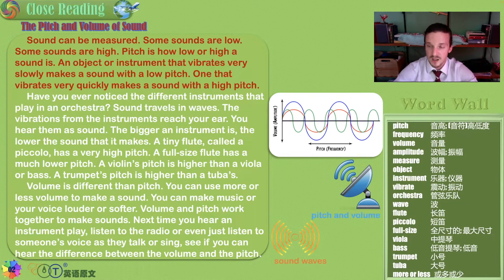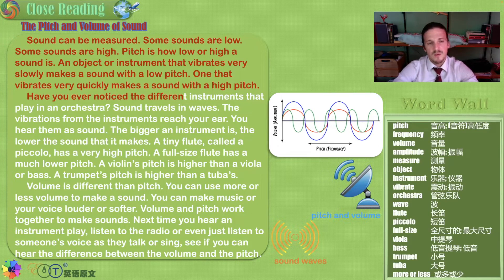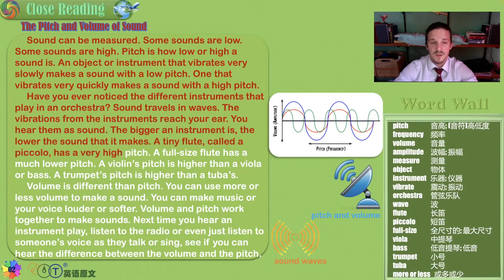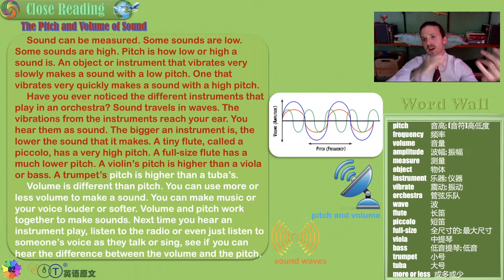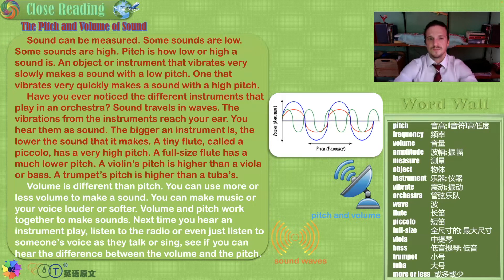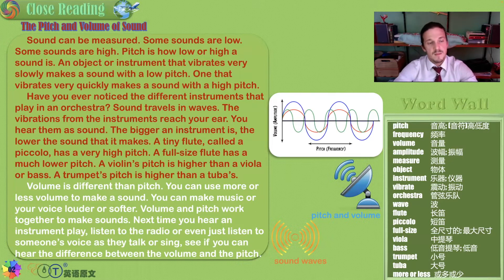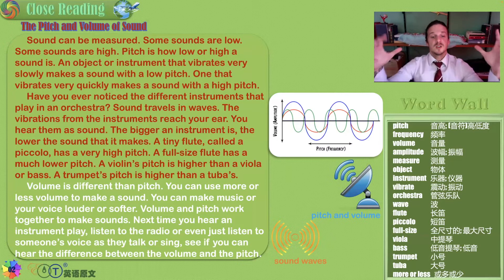You can check the picture below. Have you ever noticed the different instruments that play in an orchestra? You have the violin, the cello, trumpets, trombones. Sound travels in waves, like the waves of the ocean. The vibrations from the instruments reach your ear and you hear them as a sound. The bigger an instrument is, the lower the sound it makes.